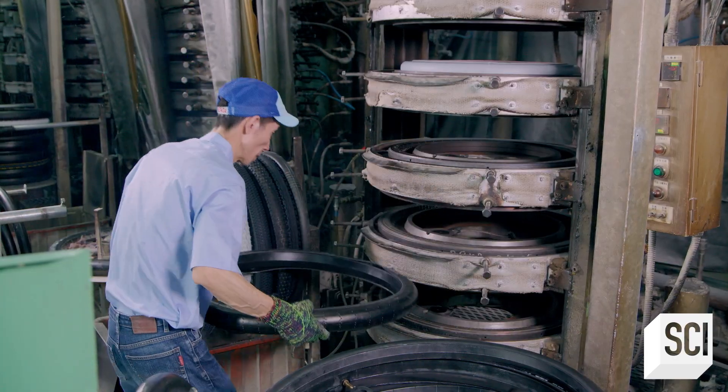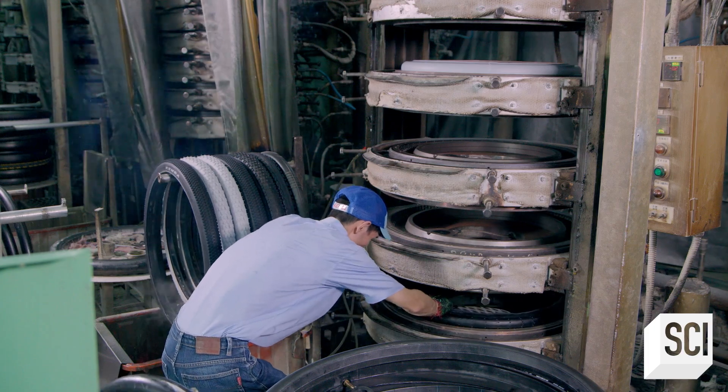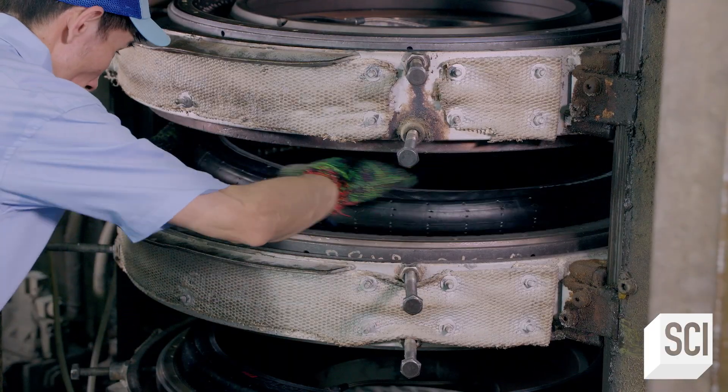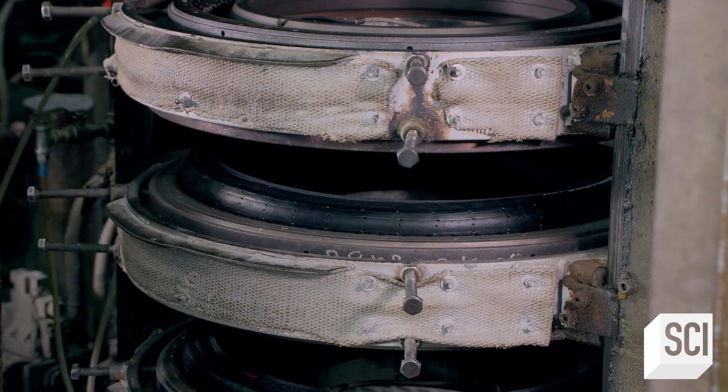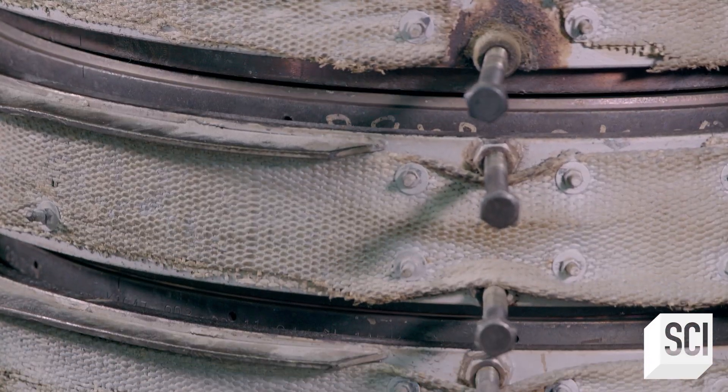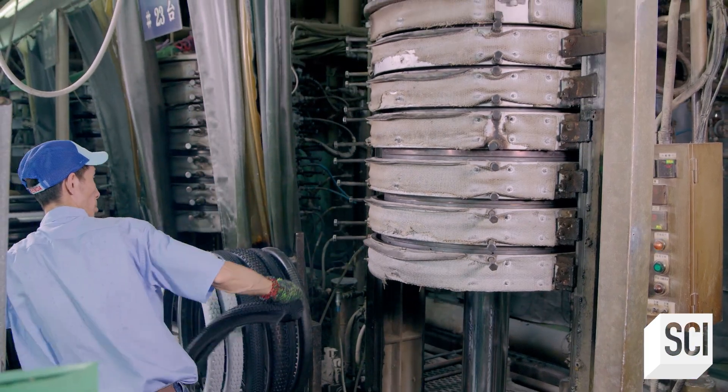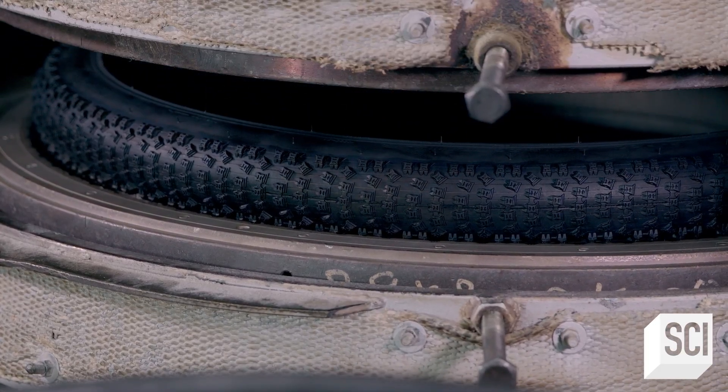He places the mountain bike tires in curing molds. These individual molds will steam cook the tires under pressure to further shape them. This process forms knobs and other protrusions on the tire surface that are designed to grip rugged terrain.